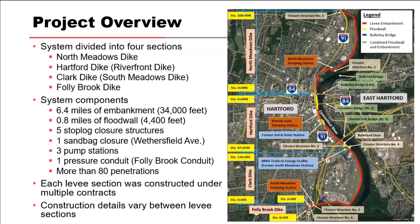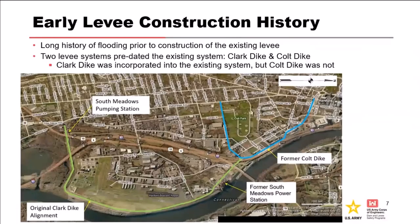Having a log of all the different penetrations through or near the levy is important for the risk assessment, primarily for internal erosion but also other failure modes. Each levy section was constructed under different contracts — it's common for levies to have interesting construction histories. The two levy systems that predated the existing system are the Clark Dyke and the Colt Dyke.